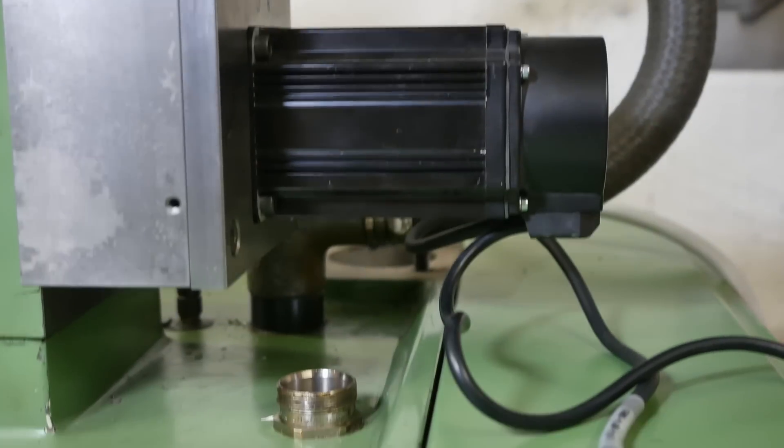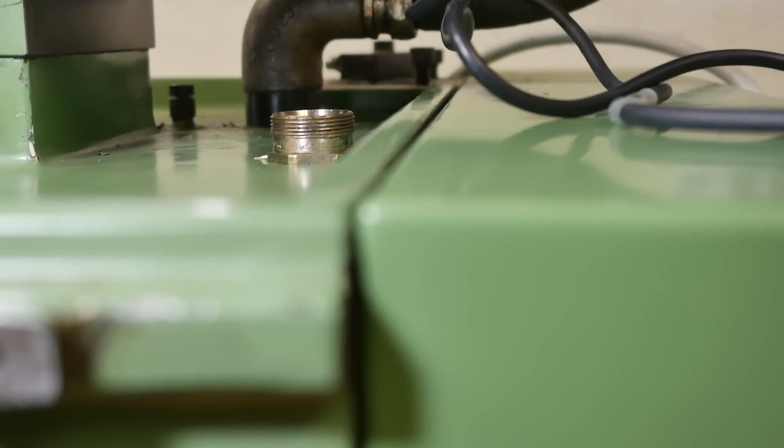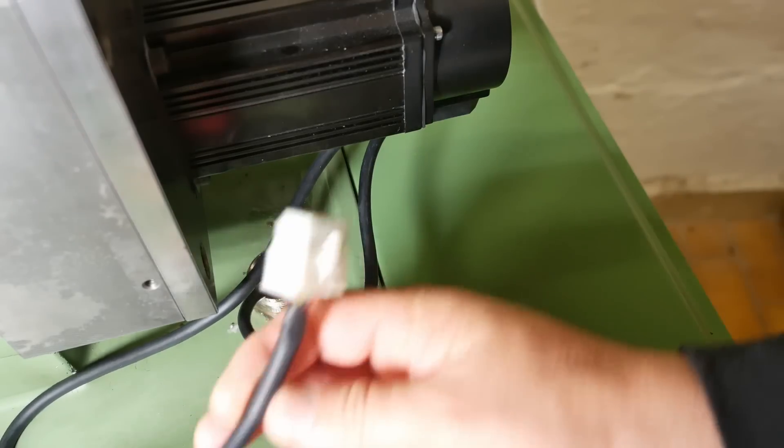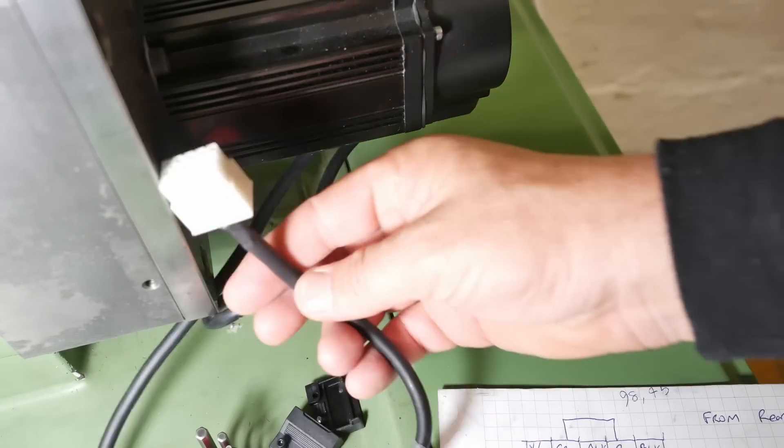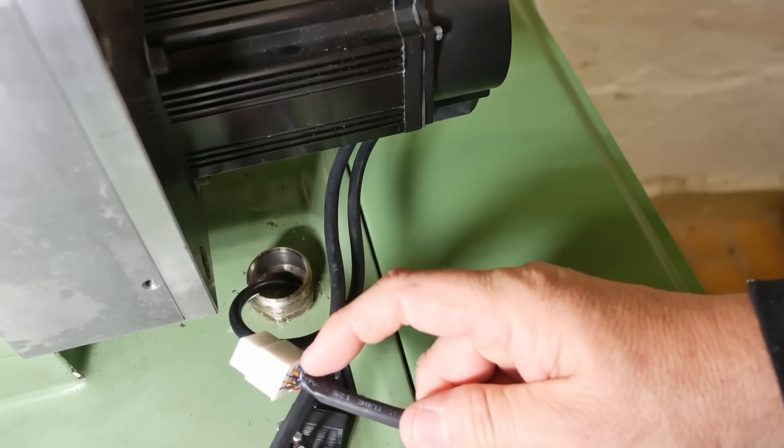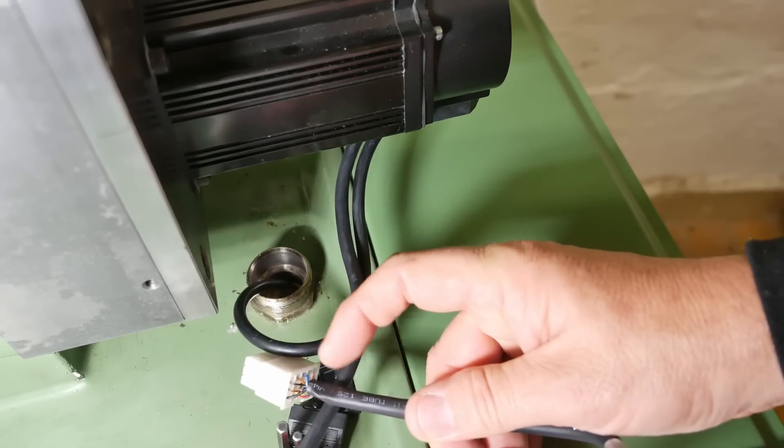I've got the first motor installed but now it needs connecting. The motor's main power cable fits through this hole quite nicely, but unfortunately the encoder cable has got a big connector on it. So I'm going to have to de-pin this connector, put it through, and then put it back together.